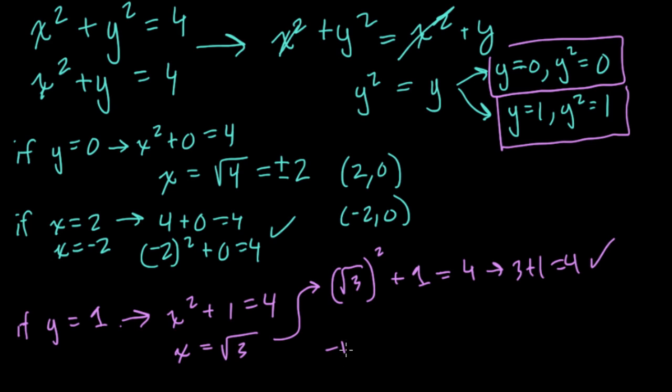So you have 3 plus 1. That equals 4. It checks out. Then negative square root of 3 squared, plus 1 also equals 4, because negative square root of 3 squared is 3. Plus 1 is 4. It also checks out.